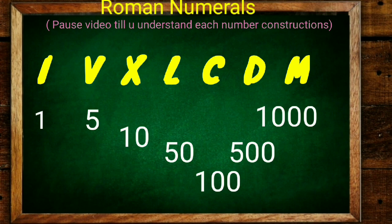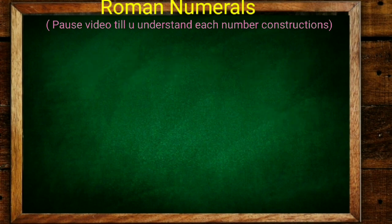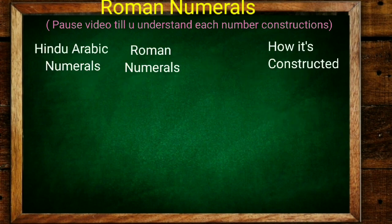Learn it properly. This is gonna help you in designing or understanding Roman numbers. I is 1, V is 5, X is 10, L is 50, C is 100, D is 500, and M is 1000. Pause the video till you understand each number construction.